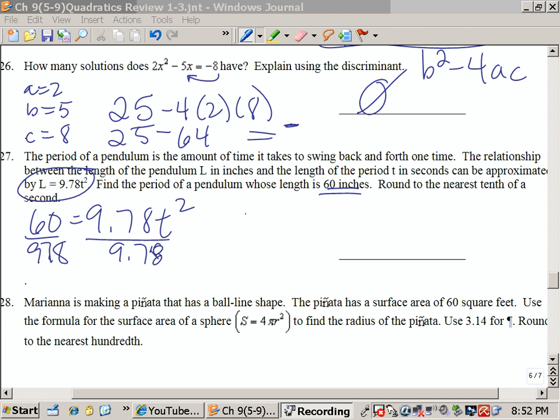So when I divide, I get 6.1. Let's see, what does it tell? Round to the nearest tenth. So it's going to be 6.13, which is 6.1, is equal to t squared.